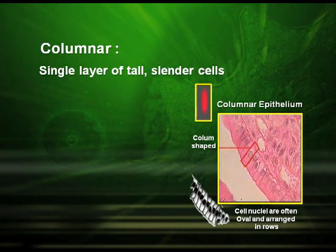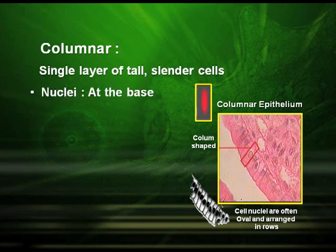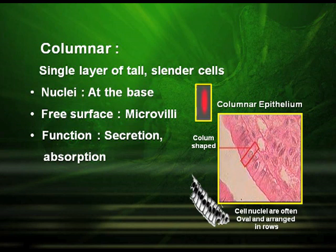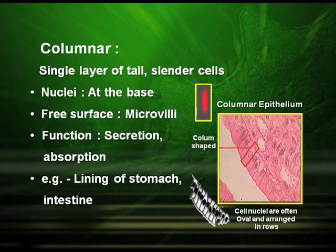Columnar epithelial tissue is made up of a single layer of slender cells. The nuclei are found at the base and the free surface has structures called microvilli. These columnar-shaped cells function in secretion and absorption and are found in the lining of the stomach and intestine.